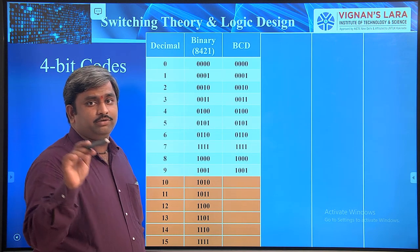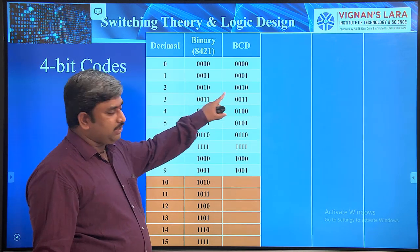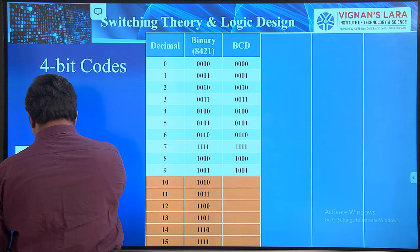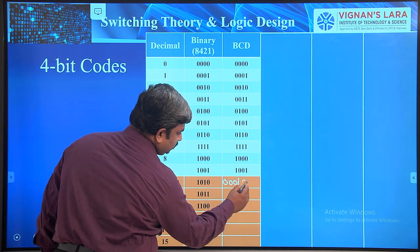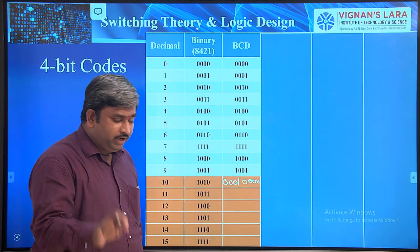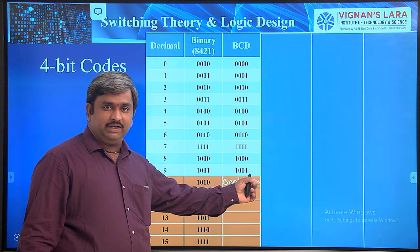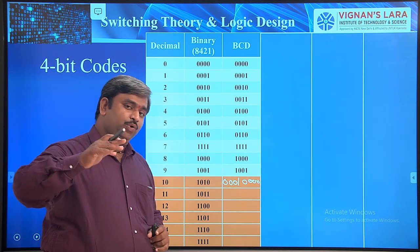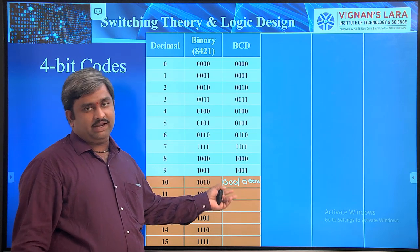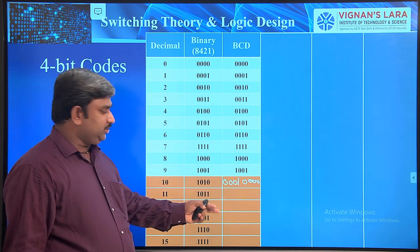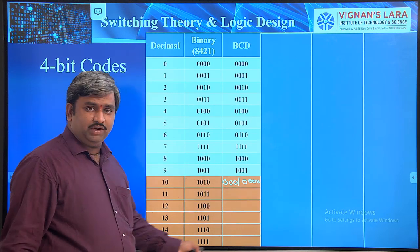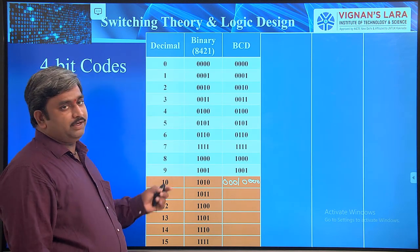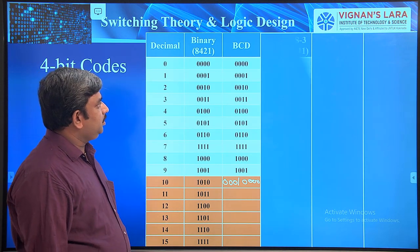BCD (Binary Coded Decimal) represents 0 to 9 the same as normal binary. For values 10 and above, BCD cannot represent them with just 4 digits — you need 8 digits. For example, decimal 10 is represented as 0001 0000 in BCD. The values 10 through 15 are invalid states for 4-bit BCD.